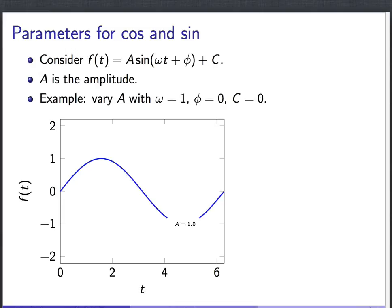I want to explain to you now what are some of the important parameters in the family of functions defined by sine and cosine. So the function we're going to consider is A sin(ωt + φ) + C. And we'll go through each of these four parameters A, ω, φ, and C in turn and talk about what they do.